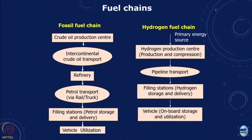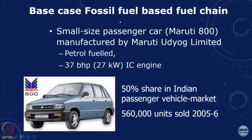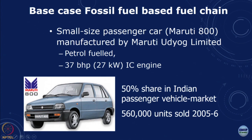Now for hydrogen vehicles versus IC engine vehicles. The fossil fuel chain is: crude oil production → refinery → petrol transport → filling station → vehicle. The hydrogen chain is: primary energy → hydrogen production → pipeline transport → storage and delivery → filling station → vehicle. As an example we use the Maruti 800 petrol car: 37 bhp (27 kW), which was the largest segment of the Indian passenger market in 2005–2006.